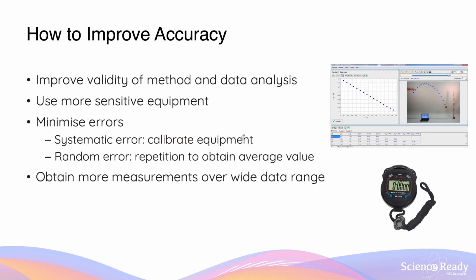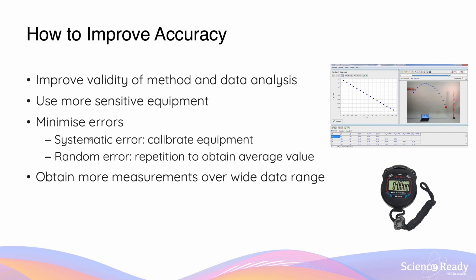Accuracy and validity are completely different concepts but are often confused because they have implications on one another. To improve accuracy, since it is fundamentally dependent on validity of the method and data analysis, you can improve the underlying procedure and type of analysis. You can also improve accuracy by using more sensitive equipment — for example, replacing a stopwatch with a video recording analyzed frame by frame to reduce reaction time errors.